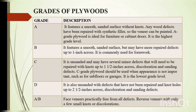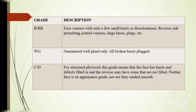D grade plywood is also unsanded with defects that have not been repaired and knot holes up to 2.5 inches across, with discoloration and sanding defects. It can also be graded as A by B, which means the face finish is practically free from all defects, with the reverse veneer having only a few knots or discolorations. B by BB graded means face veneers with only a few small knots or discolorations, with the reverse side permitting jointed veneers, large knots, plugs, etc.